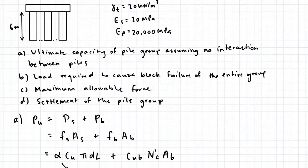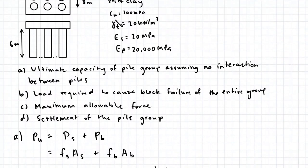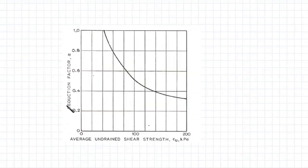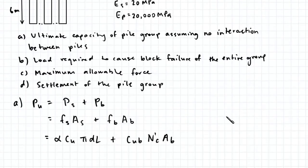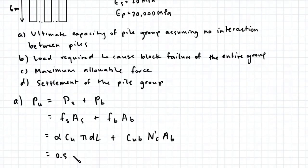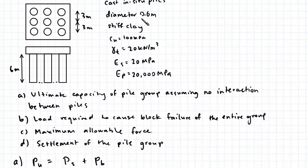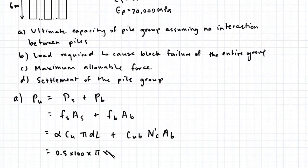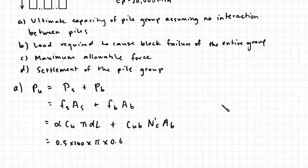To find alpha, first we need to know Cu, which is 100 kPa. Going to this chart, if we project upwards from 100 and across, that gives us a value of alpha of 0.5. So that's 0.5 times 100 times pi. The diameter of each pile is 0.6 meters, and the length is 6 meters.